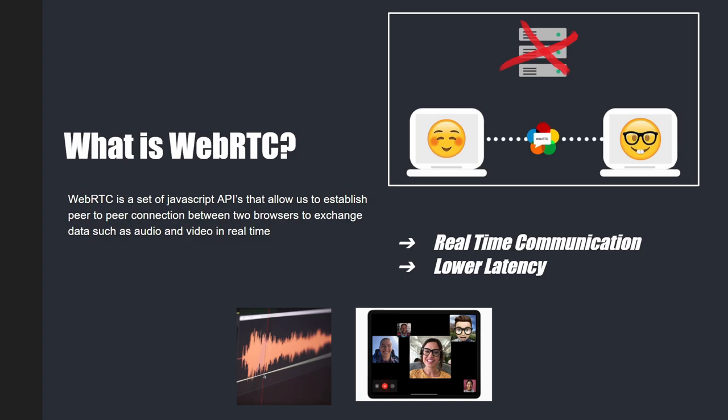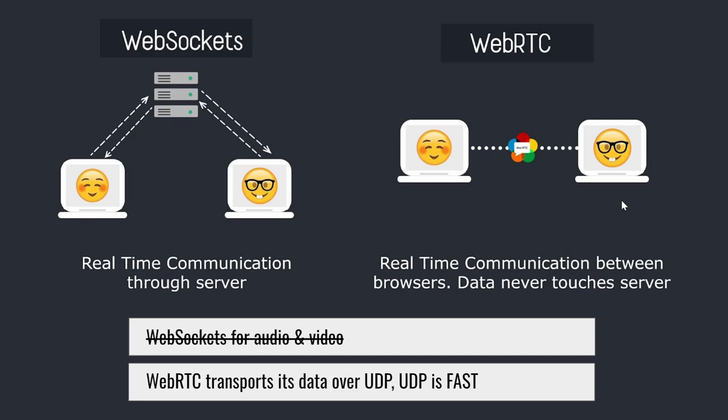WebRTC is a set of JavaScript APIs that allows us to establish a peer-to-peer connection between two browsers to exchange data such as audio and video, all in real time. The thing that makes WebRTC so special is that the connection is between two browsers and the data transmitted between them never actually reaches a server. It doesn't mean we don't need a server at all, but as this picture shows, once a connection is made, data is transmitted directly. This makes WebRTC ideal for exchanging audio and video, because any latency from hitting the server first would cause a slight delay.